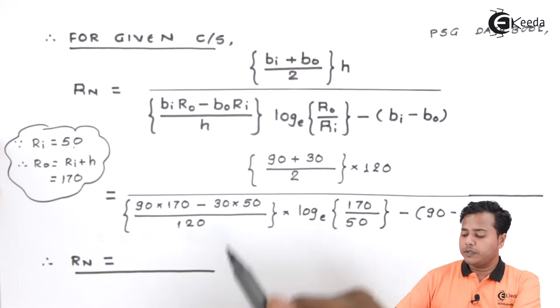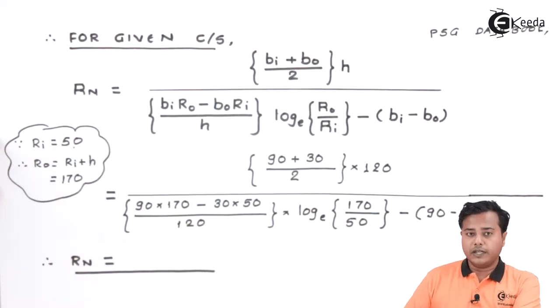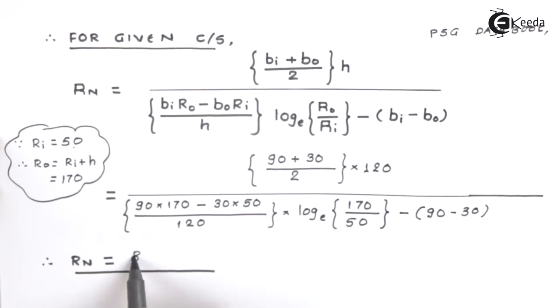After evaluating this particular expression which is quite simple in the calculator, we will get the value of Rn is equal to 69.1816 millimeter. So this is how the first evaluation is done. Let us proceed ahead.